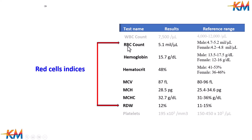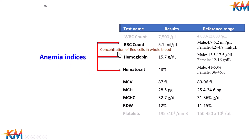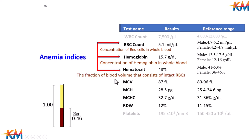There are seven parameters that provide all information about red blood cells. To detect anemia, we will focus on only three parameters called anemia indices: the first is the concentration of red cells in whole blood, the second is the concentration of hemoglobin in whole blood, and the third is the fraction of blood volume that consists of intact red blood cells.